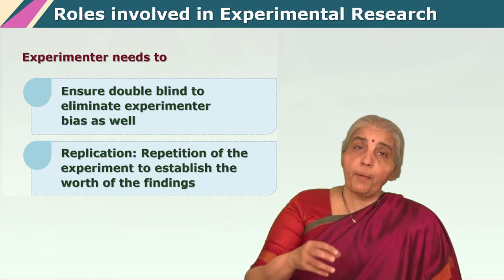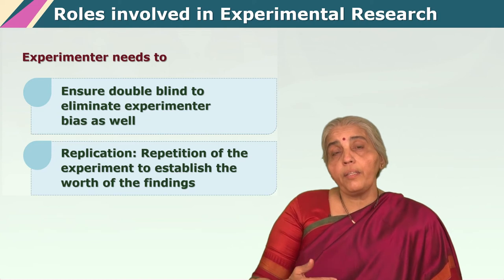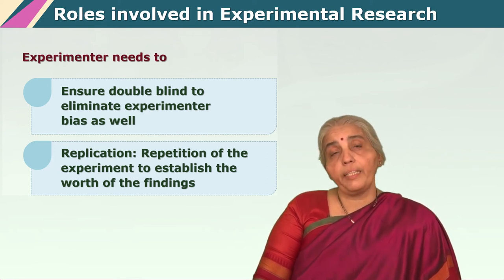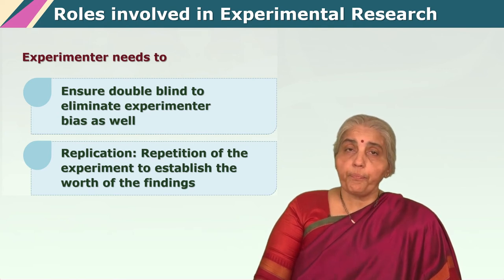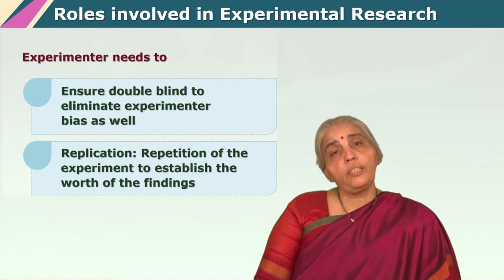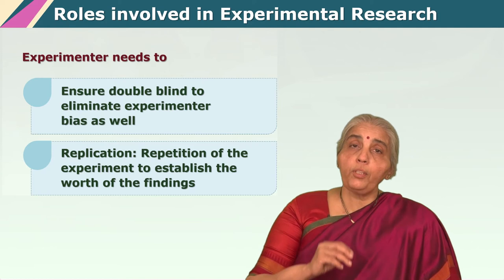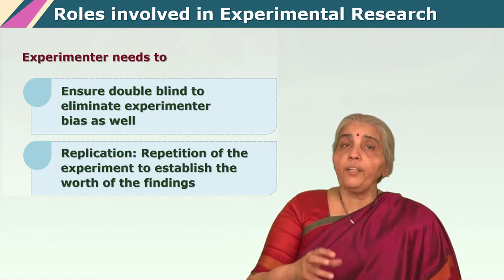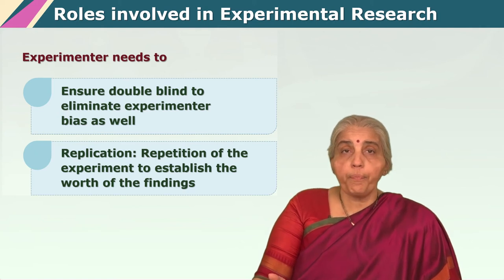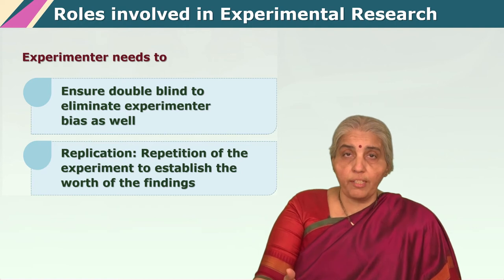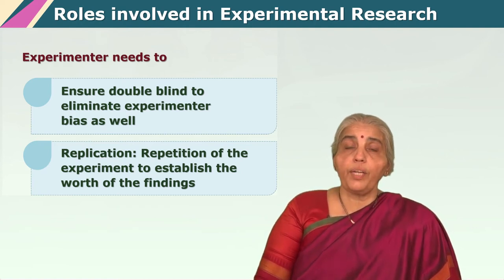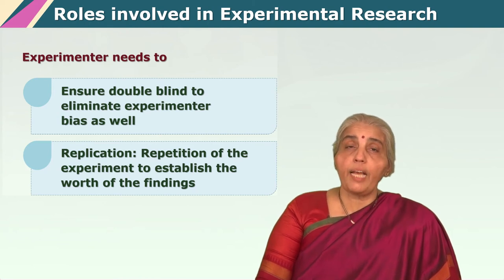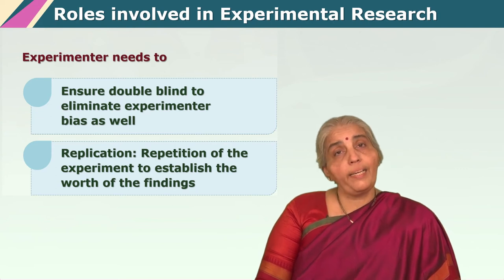It is only later after the time of analysis when the code is cracked open that the experimenter would know which exactly were the subjects in all the different levels of the experiment. So single blinds and double blinds are extremely important in experimental procedures. Another important thing which we must pay attention to is the concept of replication. An experimenter should be able to confidently say that if the same experiment is once again carried out under similar conditions, the kind of results produced would actually be the same or similar. Replication is a very important part of science and we always have high replicability in well designed experiments.